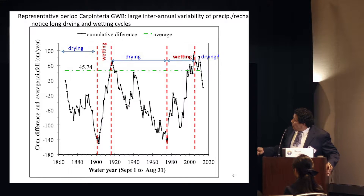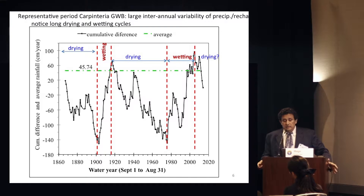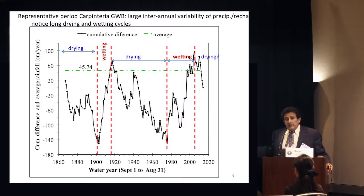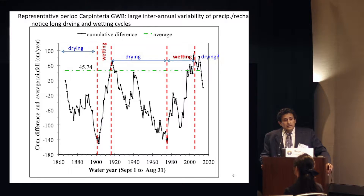Going back to 1860, we have about 160 years, which allows meaningful statistics. There is a very long overall dry period, a quick recovery of about 20 years, then a very long-term declining or drying condition, then a wetting one. And currently, what we call a severe drought that hasn't ended in the Carpinteria Water District area. Notice that it is not trivial to find a climatically representative period. It's very important to have these long-term data sets, and it may take many decades or centuries to make a meaningful assessment.